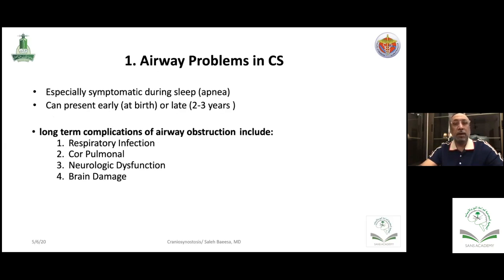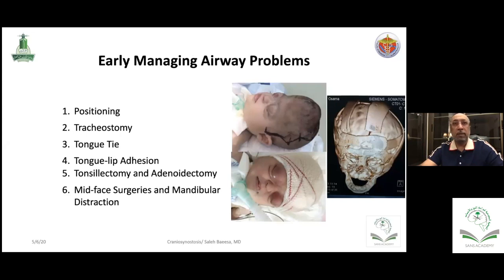If airway problems are not solved early, patients will have long-term complications like repeated respiratory infections affecting neurological function and brain development through chronic hypoxia and hypercapnia. Airway management ranges from positioning advice, to elective tracheostomy before any surgery, removal of local problems like tongue tie or large tonsils, and sometimes very early intervention for severely deformed face and mandible. This is one child with syndromic craniosynostosis with protruding eyes and a tracheostomy — we spent two to three hours sorting out the airway before surgery.